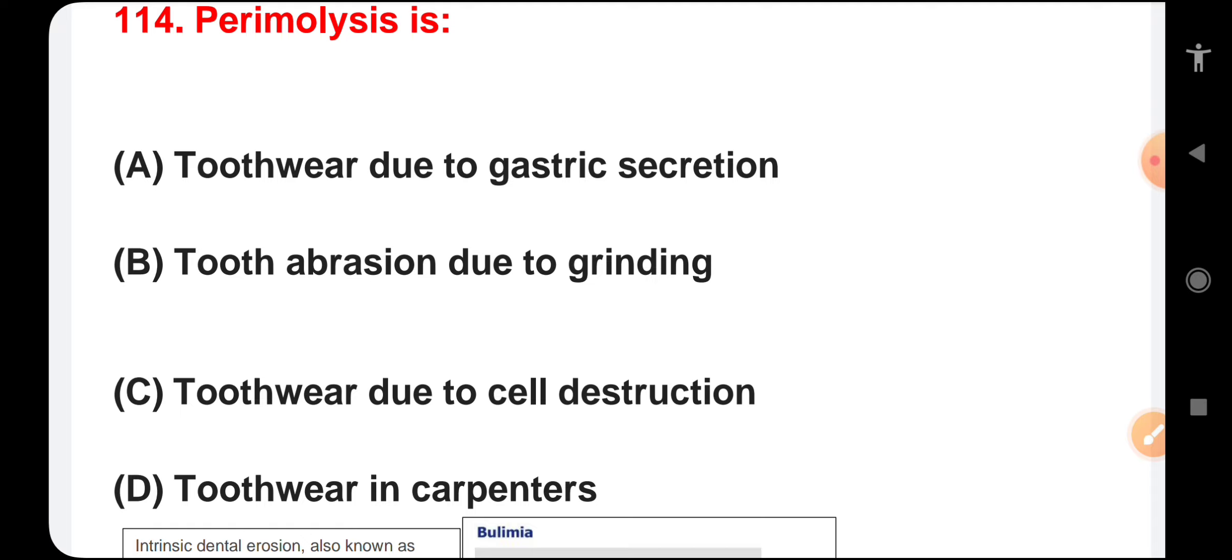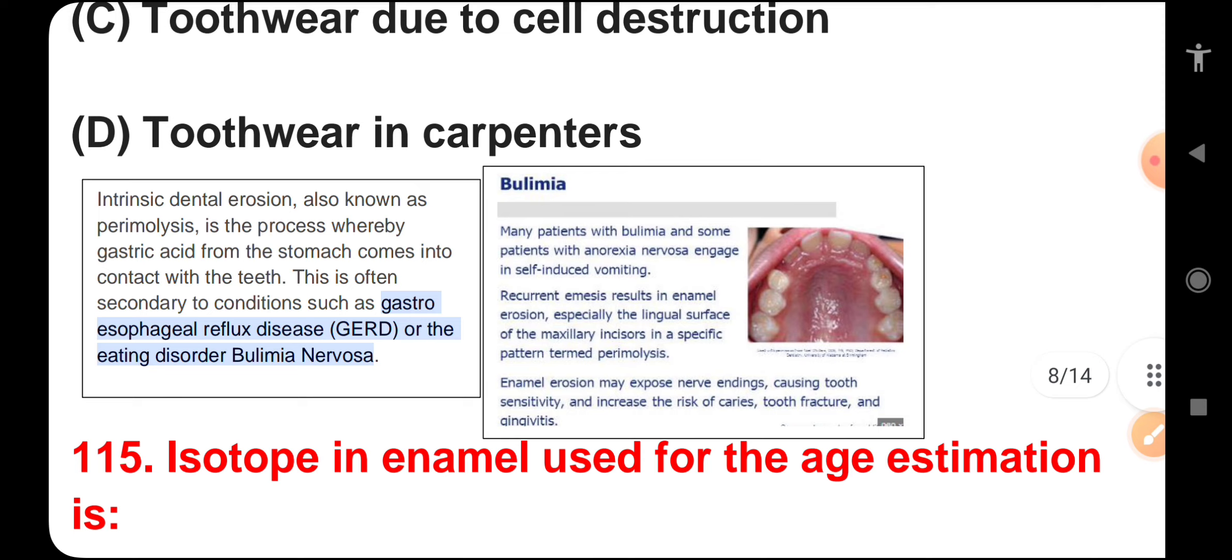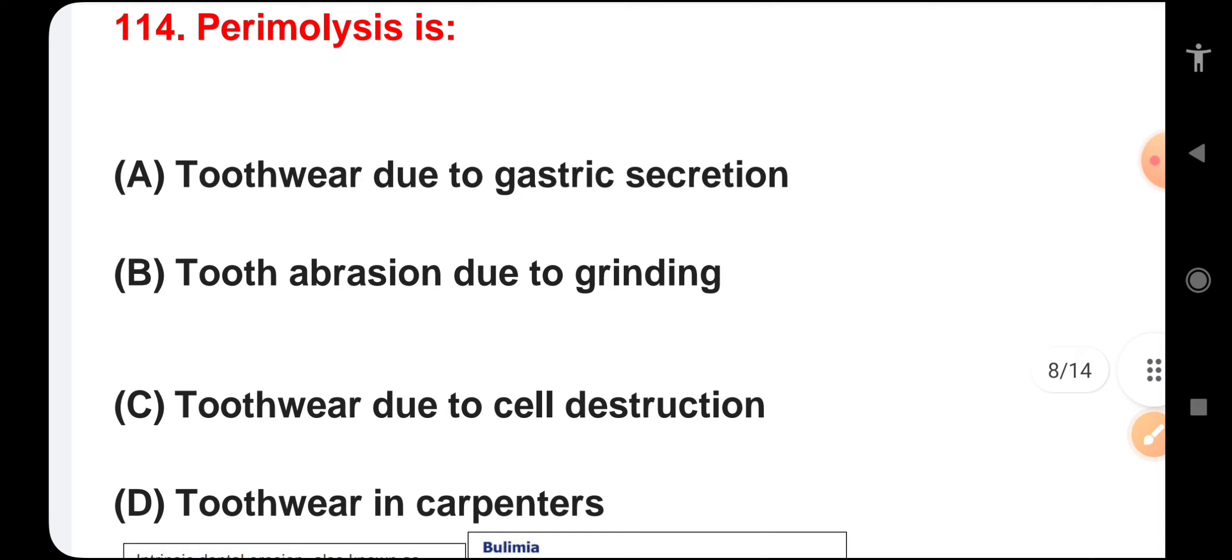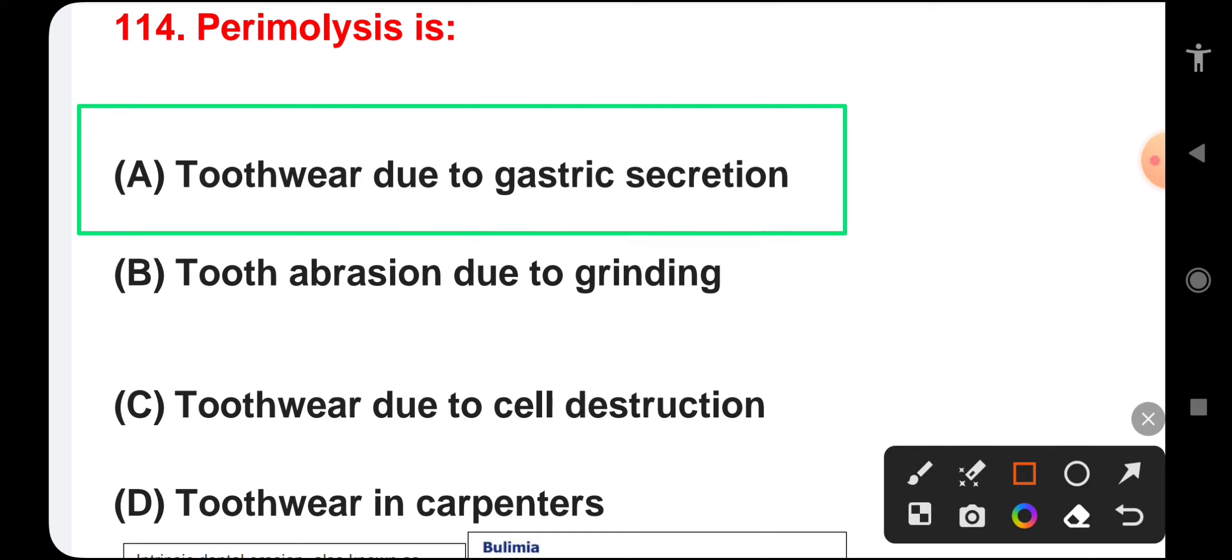Perimolysis is tooth wear due to gastric secretion, tooth abrasion due to grinding, tooth wear due to self-destruction, or tooth wear in carpenters. Intrinsic dental erosion, also called perimolysis, is a process where gastric acid from the stomach comes into contact with teeth. This occurs secondary to conditions such as gastroesophageal reflux disease GERD or the eating disorder bulimia nervosa. The correct answer is tooth wear due to gastric secretion.